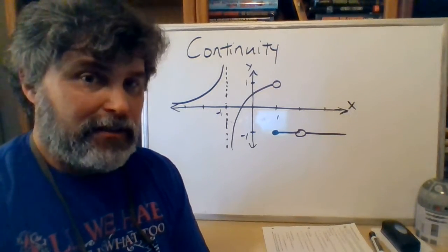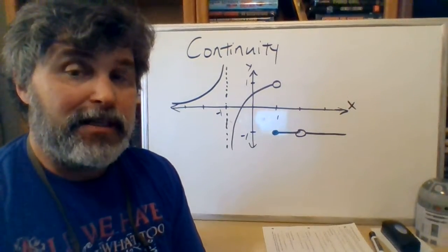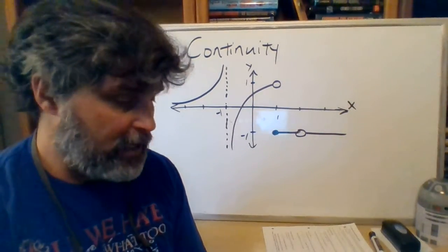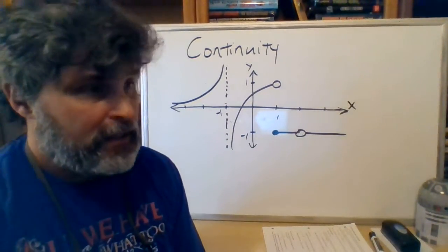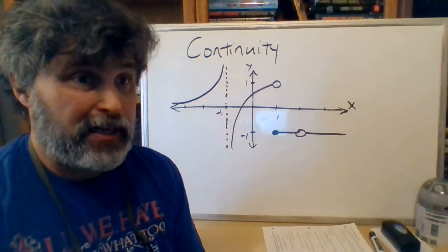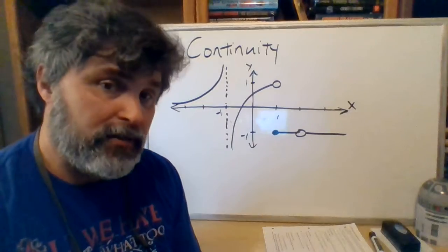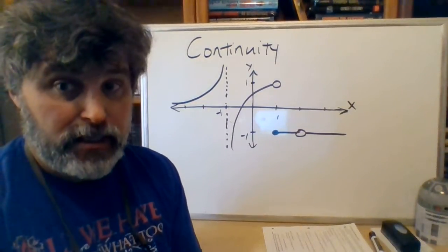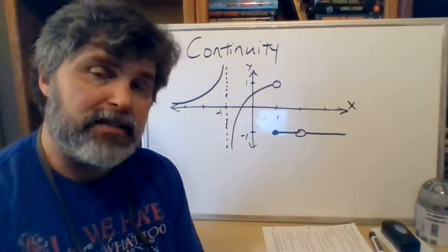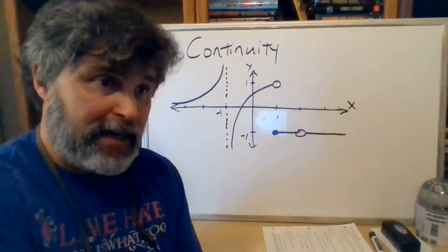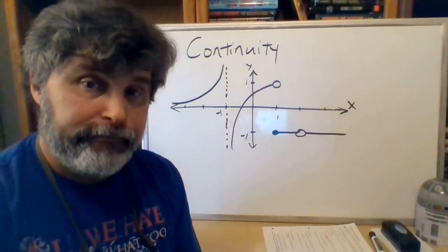Welcome back to another day's lesson in precalculus. I'm going to talk about several things in this video because this particular unit has a mishmash of three different things. They're all vaguely related in that they're all math. The first one is continuity and discontinuities and the three-step test for continuity. The next one is the intermediate value theorem. And then finally, briefly, end behavior.